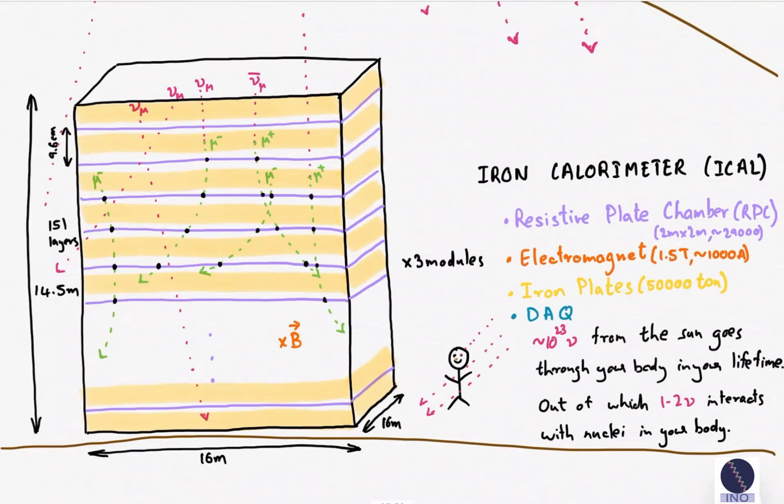The data acquisition system of ICAL, with around 3.6 million channels, will be patiently waiting to capture the tracks left by neutrino interactions. And out of the billions of atmospheric neutrinos going through the detector each day, on average 3 will leave their signature in the ICAL detector.